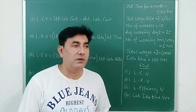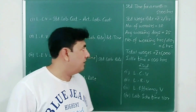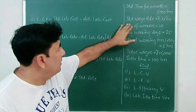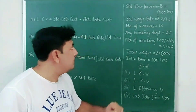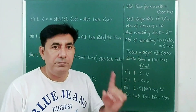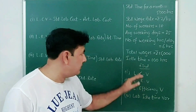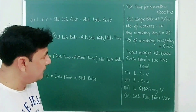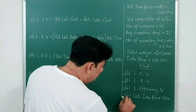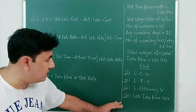This question is on labor variance and the previous one was on material, so there are two options — you might get a question on material or on labor. Let's see what is given: standard time for a month is 5000 hours, standard wage rate is ₹2 per hour, number of workers is 10, average working days is 25 days per month, number of working hours per day is 6 hours, total wages are ₹15,000, and idle time is 100 hours. You need to find labor cost variance, labor rate variance, labor efficiency variance, and labor idle time variance.